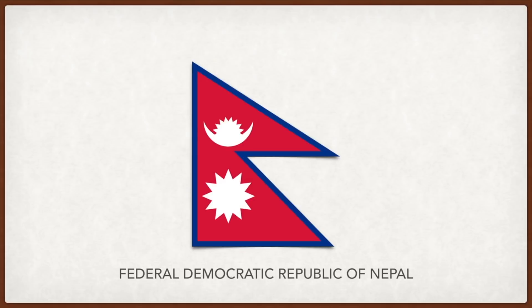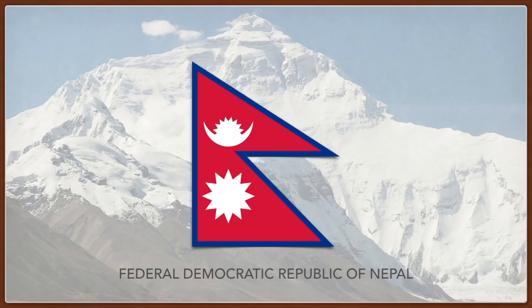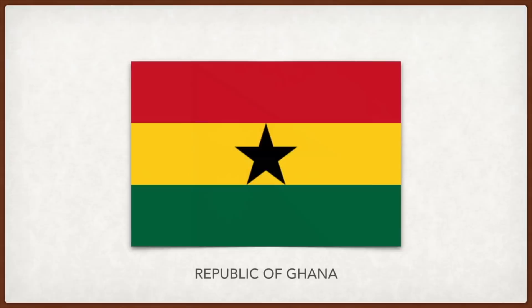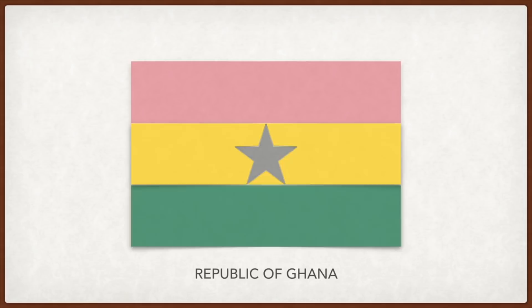The sun and moon represent permanence — the hope that Nepal will last as long as the sun and moon. Ghana: the red represents the blood of those who died for independence from the United Kingdom, the gold represents mineral wealth, the green is for the rich forest and natural resources, and the black star is the symbol of African emancipation.